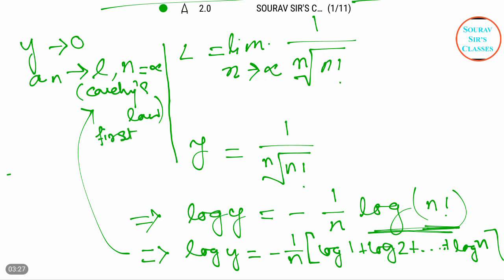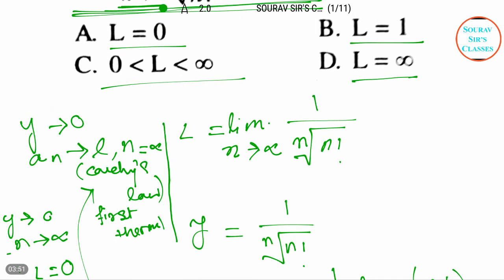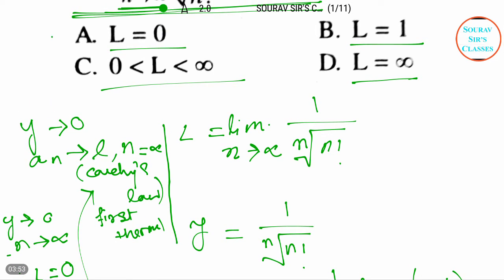So as y is 0 and n tends to infinity, then it equals to zero. So this is how option A will be the answer, that is L equals 0. I hope you understand it.